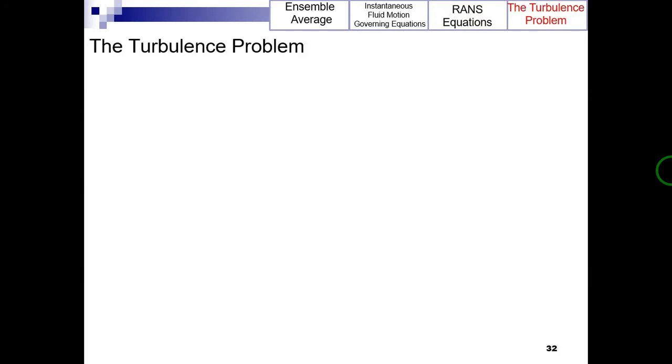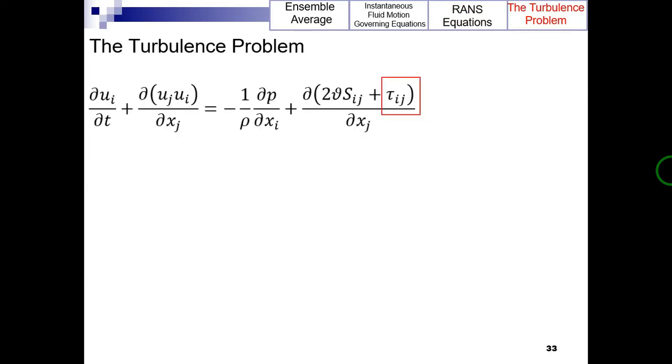Now let's talk about the turbulence closure problem. It is the appearance of the Reynolds stress which makes the turbulence problem so difficult, at least from the engineer's perspective. Even though we can pretend it is a stress, the physics which give rise to it are very different from the viscous stress. The viscous stress can be related directly to the other flow properties by constitutive equations, which in turn depend only on the properties of the fluid.